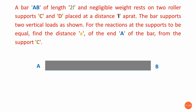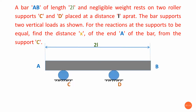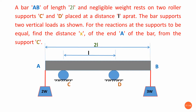The bar AB of length 2L is given, resting on two roller supports C and D, and the distance between these two is L apart. The bar supports two vertical loads: 2W at end A and 3W at end B. We need to find the distance X between roller C and end A. To find this X value, we first need to draw the free body diagram, which is what we are discussing in this video lecture.